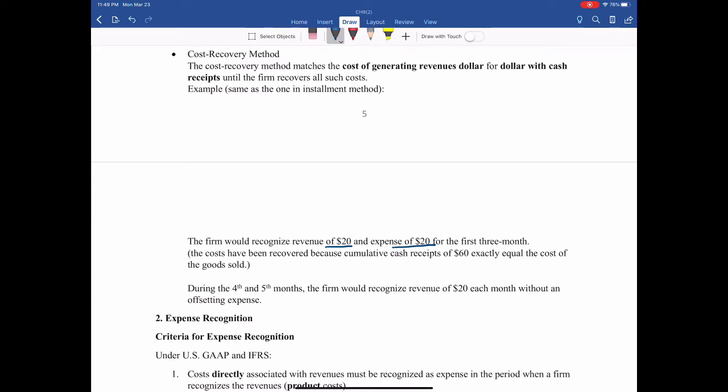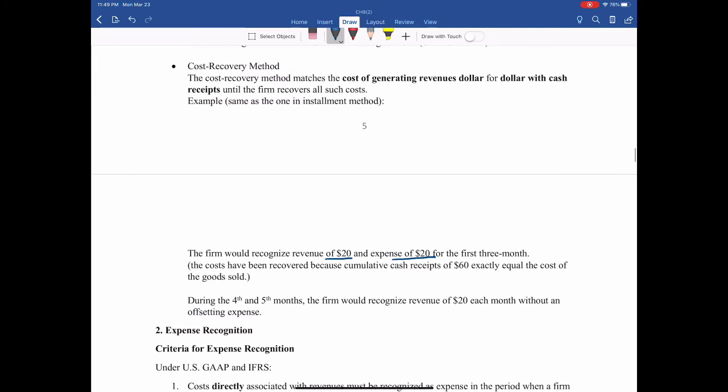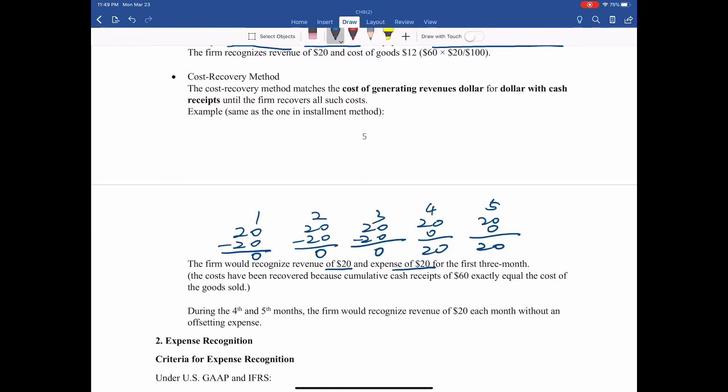So the first year, revenue is $20, expense is $20, margin zero. Second, $20, $20, zero. Third, $20, $20, zero. All the $60 expenses are recognized. Because the cash receipts are uncertain, it should defer the profits until all the expenses are covered.